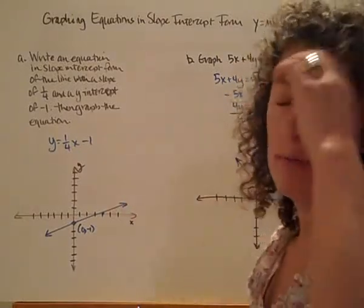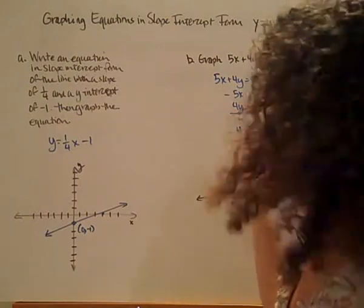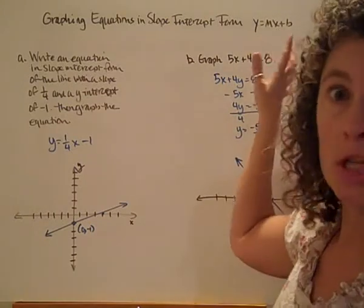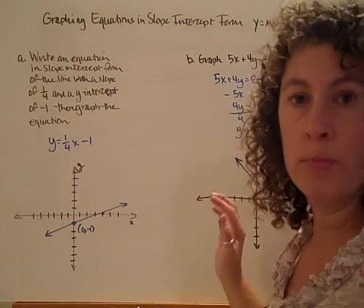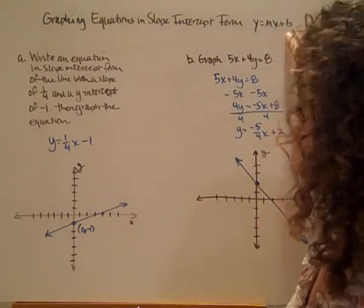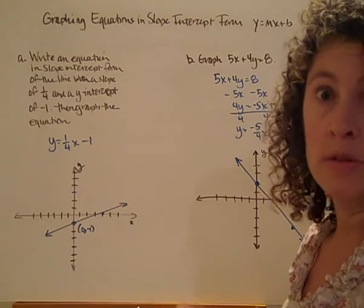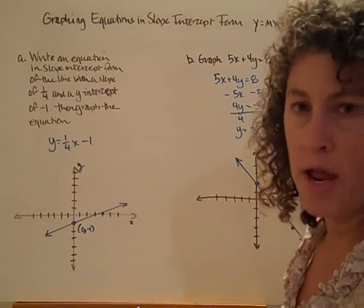Graphing equations in slope-intercept form. Our slope-intercept form is y equals mx plus b. The m represents our slope, which has been our rate of change up until now in our linear functions. And b represents our y-intercept, where the line of the graph crosses the y-axis.